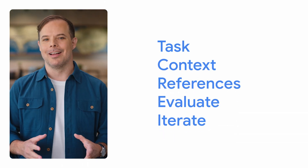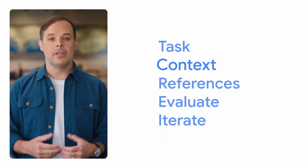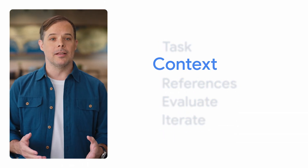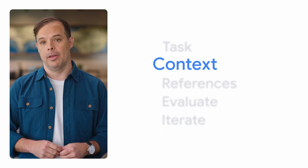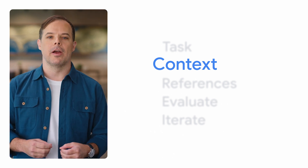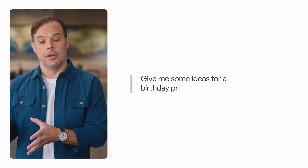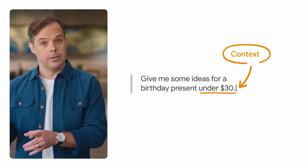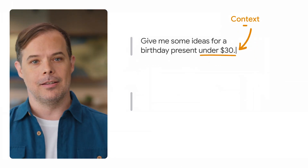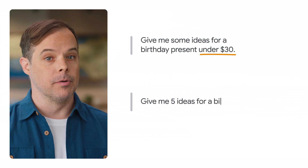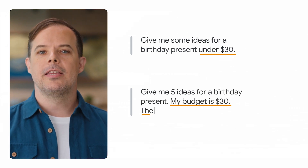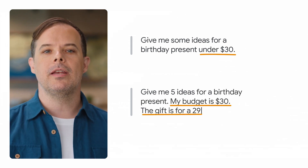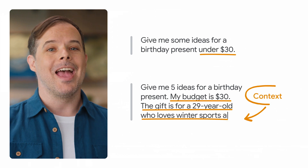Next, you'll include context — the necessary details to help the Gen AI tool understand what you need from it. This is the difference between writing 'give me some ideas for a birthday present under $30' and 'give me five ideas for a birthday present. My budget is $30, the gift is for a 29-year-old who loves winter sports.'